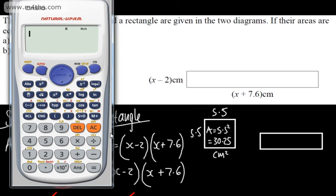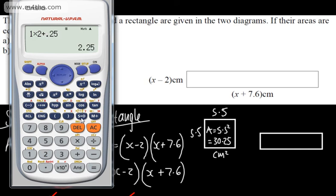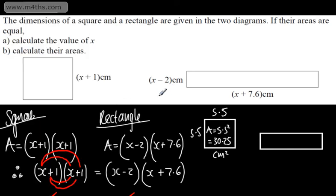If you want to square numbers ending in .5, it's relatively straightforward: multiply the whole numbers either side and add 0.25. For example, 1.5 squared — multiply 1 by 2 to get 2, then add 0.25, giving 2.25. For 6.5 squared, it's 6 times 7 which is 42, plus 0.25, giving 42.25. It looks impressive but it's fairly logical.